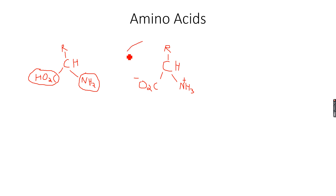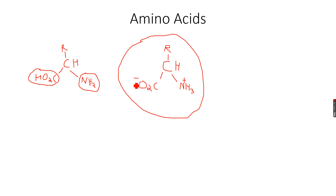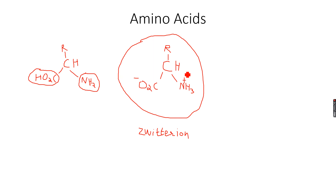This is a negative ion and this is a positive ion, so overall this molecule is neutral because it has one negative charge and one positive charge — the charges cancel out. This ion is called a zwitterion, which is a German word meaning two ions in one molecule. We have two charges in the same molecule — one negative and one positive — and the overall charge is zero.